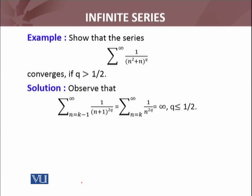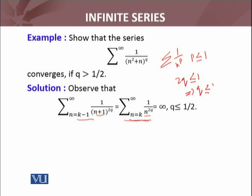We consider a small trick: observe that summation from n = k−1 to infinity of 1 over (n+1)^(2q). If we perform an index shift to start from n = k to infinity, we replace n+1 by n, giving us a new series. We compare this with summation 1 over n^p. This series diverges if p ≤ 1, so it will diverge if 2q ≤ 1, which implies q ≤ 1/2 — so this series is divergent whenever q ≤ 1/2.